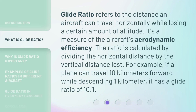Glide ratio refers to the distance an aircraft can travel horizontally while losing a certain amount of altitude. It's a measure of the aircraft's aerodynamic efficiency. The ratio is calculated by dividing the horizontal distance by the vertical distance lost. For example, if a plane can travel 10 kilometers forward while descending 1 kilometer, it has a glide ratio of 10 to 1.